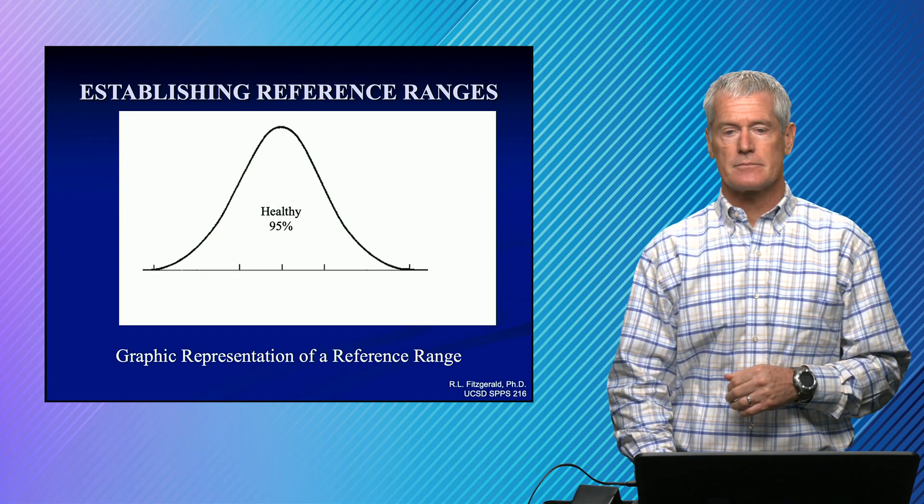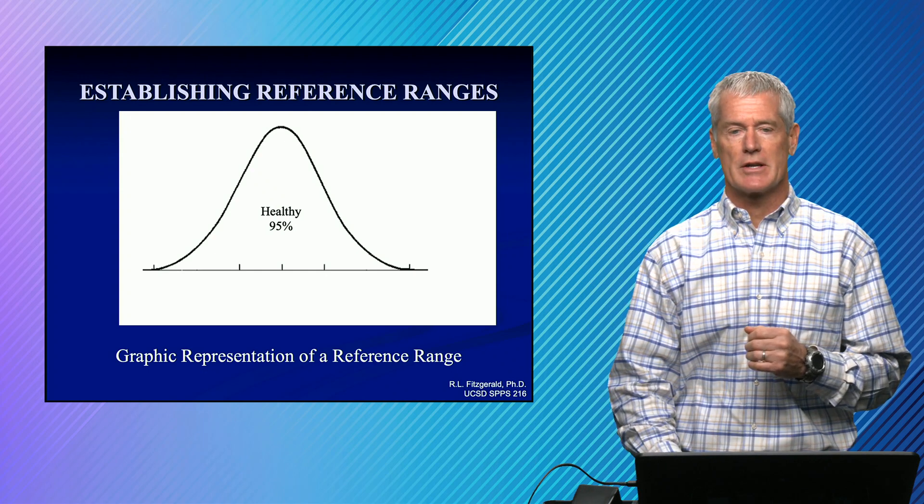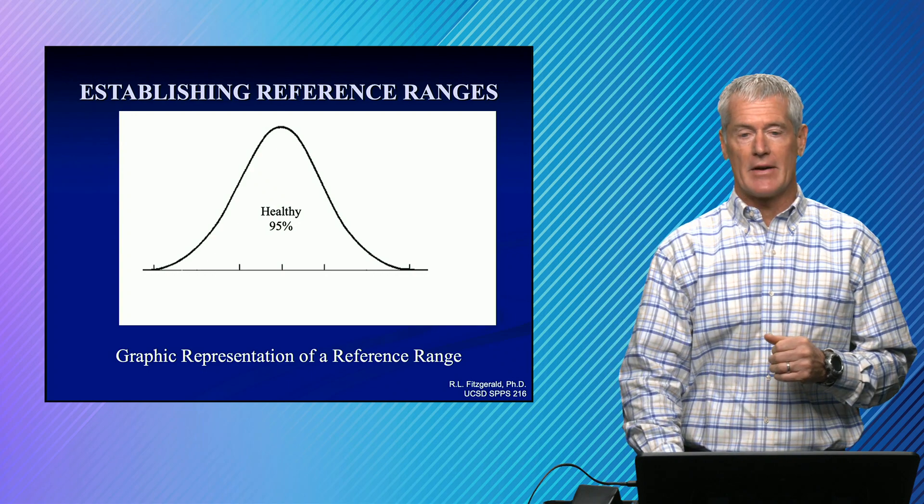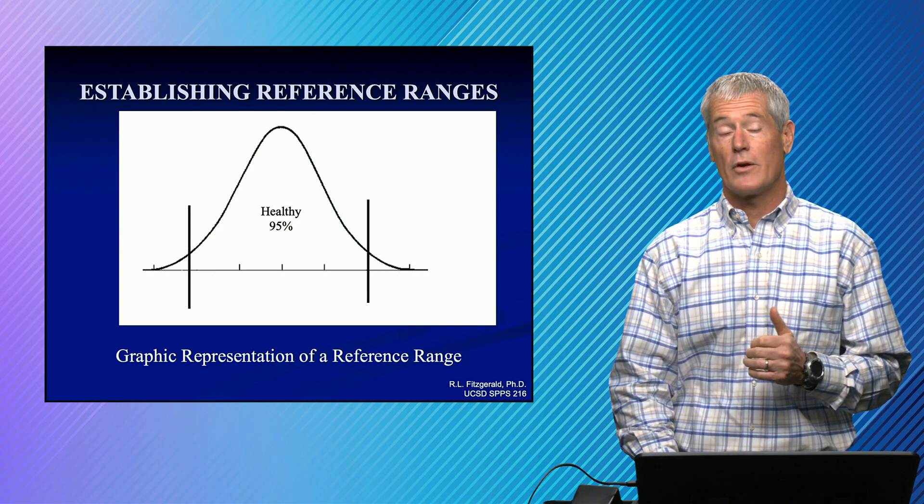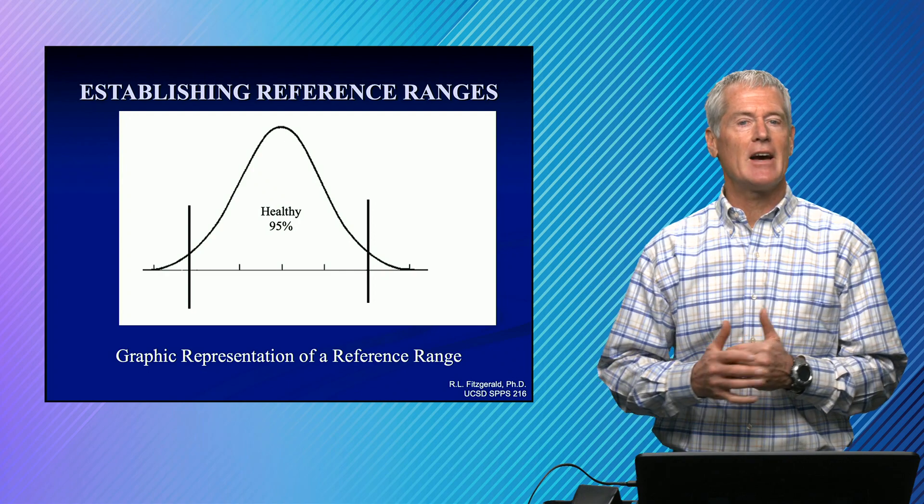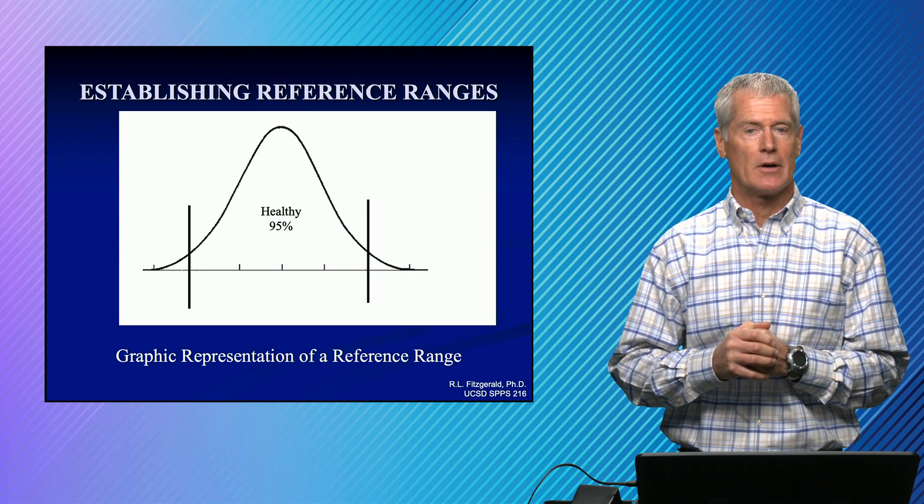And so again, the concept of a reference range is important and that's what we're going to stress today. A reference range is the inner 95% in the vast majority of cases. And what that means when you're thinking about ordering lab tests is that 5% of the time, on a healthy population, you're going to get an abnormal lab result.